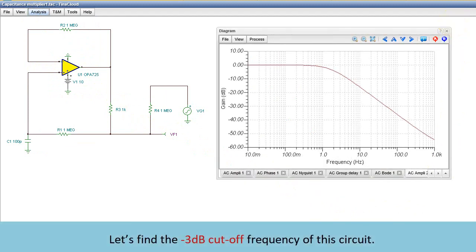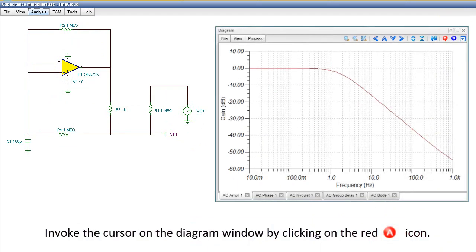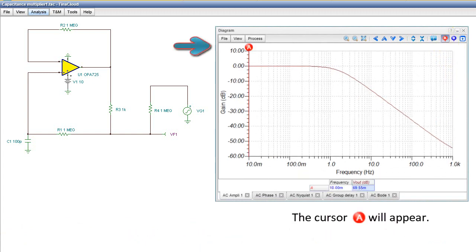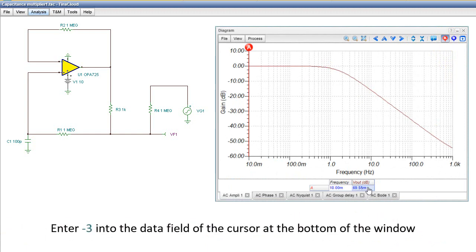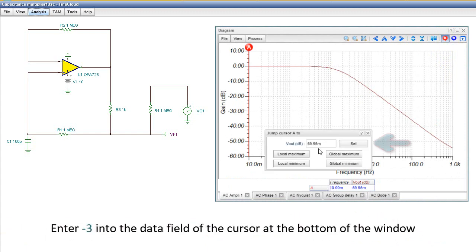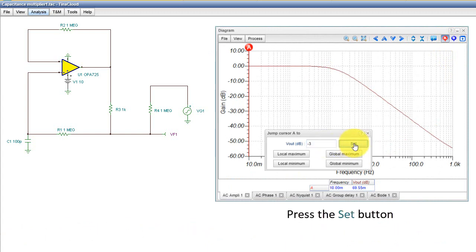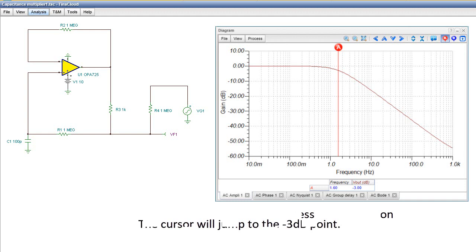Let's find the minus 3 dB cutoff frequency of this circuit. Invoke the cursor on the diagram window by clicking on the red A icon. The cursor A will appear. Enter minus 3 into the data field of the cursor, at the bottom of the window, then press the Set button. The cursor will jump to the minus 3 dB point.